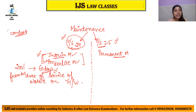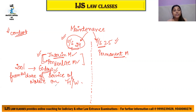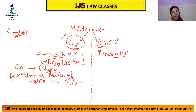Regarding conduct under Section 24 interim maintenance: whether the husband says the wife committed adultery, or the wife says the husband was cruel — the conduct of the parties is completely irrelevant and immaterial for interim maintenance. The proceedings are ongoing, so conduct has no relevance under Section 24.